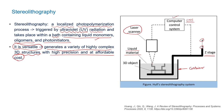Wherever the laser interacts with the liquid material, that portion gets cured and solidified. After the first layer is solidified, the stage moves in the downward negative Z direction, and another layer of liquid comes to the surface. Again, UV laser radiation is applied and curing occurs as directed by the CNC controller. After the second layer is cured, the Z stage goes down by a fixed distance, typically 0.1 mm to 2 mm depending on the desired layer thickness.